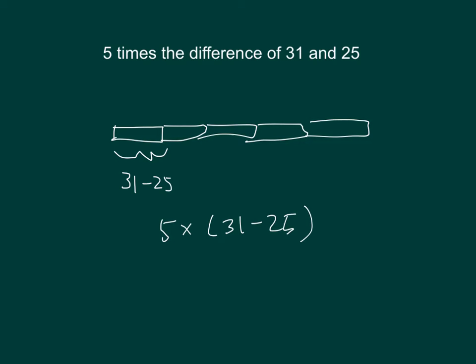If I was to evaluate this expression, 31 minus 25 is 6, and 5 times 6 is 30.